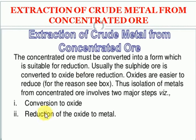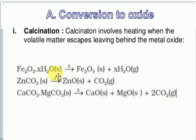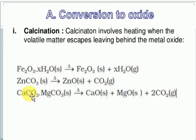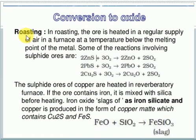First, we discuss conversion into oxides. Calcination involves heating of the metal ore with a limited supply of oxygen. During calcination, carbonate ore becomes oxide ore, hydrate ore becomes anhydrate ore, and volatile materials escape.